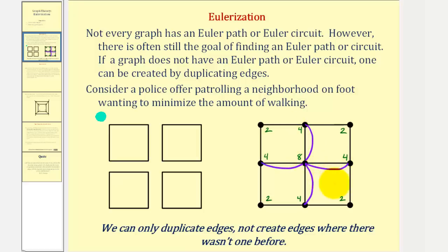And now because all the vertices have an even degree, we can create an Euler circuit using this graph. Notice how the duplicate edges would represent where the officer would have to walk down a street twice.